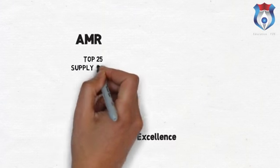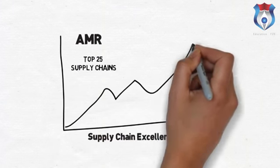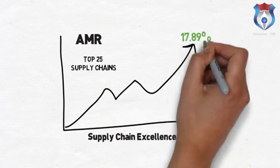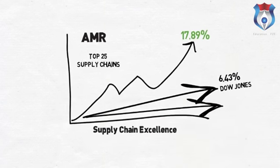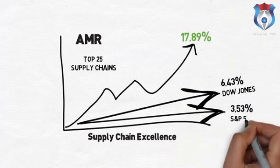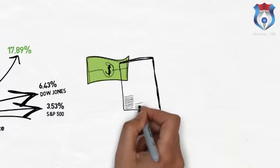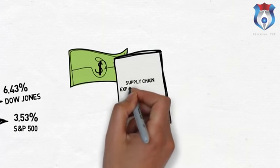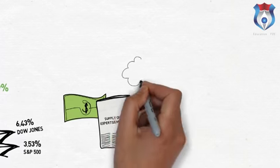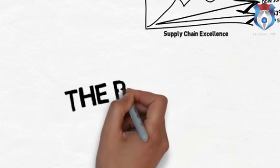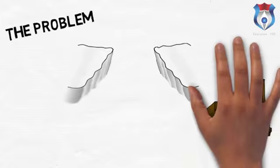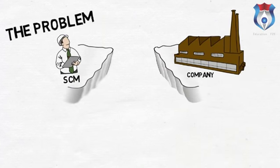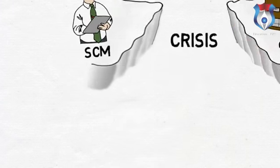Based on research from AMR on the top 25 supply chains in the world, investment in these companies yielded an average return of 17.89% in 2007, compared with returns of 6.43% for the Dow Jones Industrial Average and 3.53% for the S&P 500. In other words, supply chain management expertise really matters. However, companies face a giant obstacle: there is a shortage of trained supply chain management professionals at all levels — some have even called it a crisis — simply a matter of supply and demand for talent.